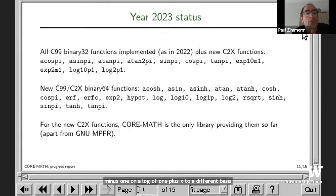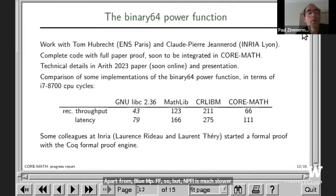This is for single precision. For double precision, we have implemented many new functions. For example, if you want to compute a sine pi of some value, currently the only library computing that function is CORE-MATH, apart from GNU MPFR of course, but GNU MPFR is much slower for double precision. This is a function that gave us a lot of work: the binary64 double precision power function. This is joint work with Tom Abresch, who is a student at ENS in Paris, and Claude-Pierre Jeannerod, a colleague in Lyon.